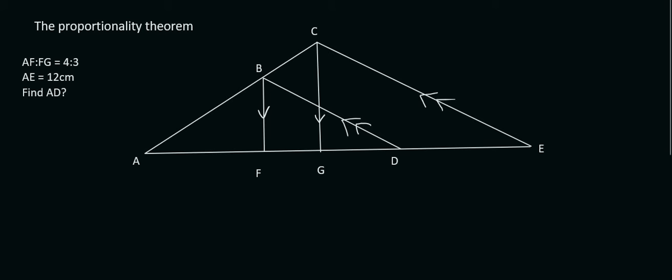Here's another proportionality question. They tell us that AF to FG is 4 parts to 3, so we can say 4X to 3X — you could use R, W, whatever letter you want. They also tell us that the length of AE is 12 centimeters. The question says find AD.